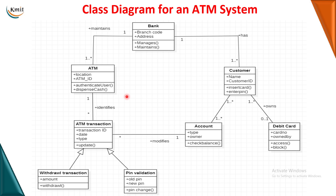Here is how a class diagram looks for an ATM system. The classes identified are Bank, ATM, ATM Transaction, Withdrawal, PIN, PIN Validation, Account, Debit Card, and Customer. Bank has attributes branch code and address, with methods to manage accounts and maintain customer records. ATM has attributes location and ATM ID, with operations to authenticate the user and dispense cash. ATM Transaction has attributes transaction ID, date, and type, with method update. Withdrawal has attribute amount.